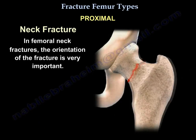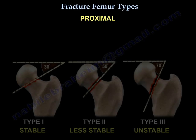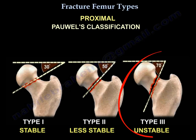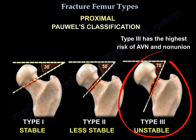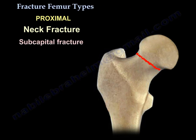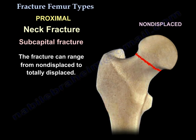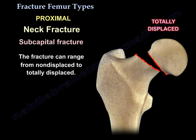In femoral neck fractures, the orientation of the fracture is very important. Pauwels type 3 has the highest risk of avascular necrosis and non-union. Here is the classification. Subcapital femoral neck fractures can range from non-displaced to totally displaced.